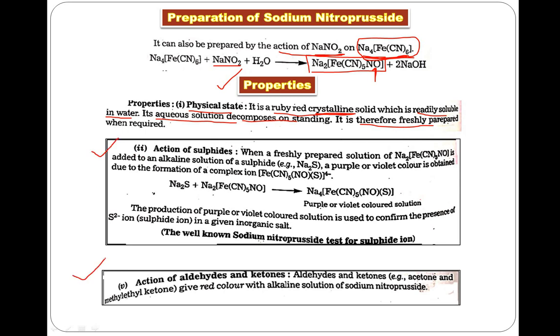Now for chemical properties, there are two very important properties we should remember. First, sodium nitroprusside is an important agent for the detection of sulfide ions. To detect the sulfide ion in a mixture, we add sodium nitroprusside to that mixture in an alkaline medium. When sulfide ion is present, the solution becomes purple or violet colored.